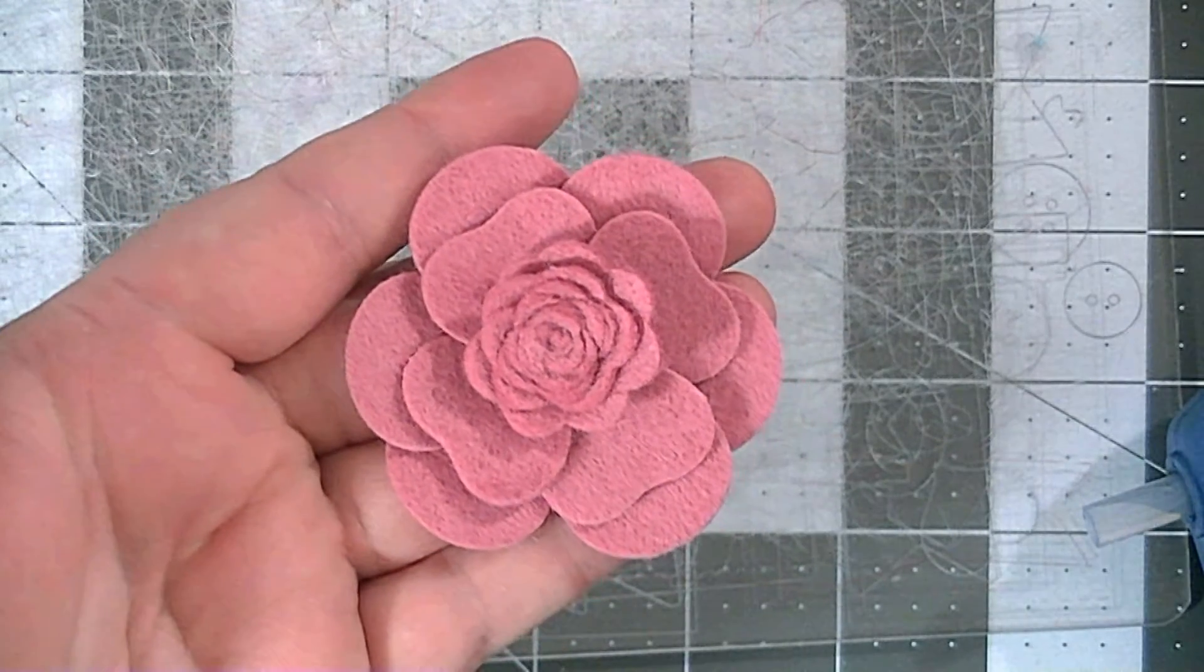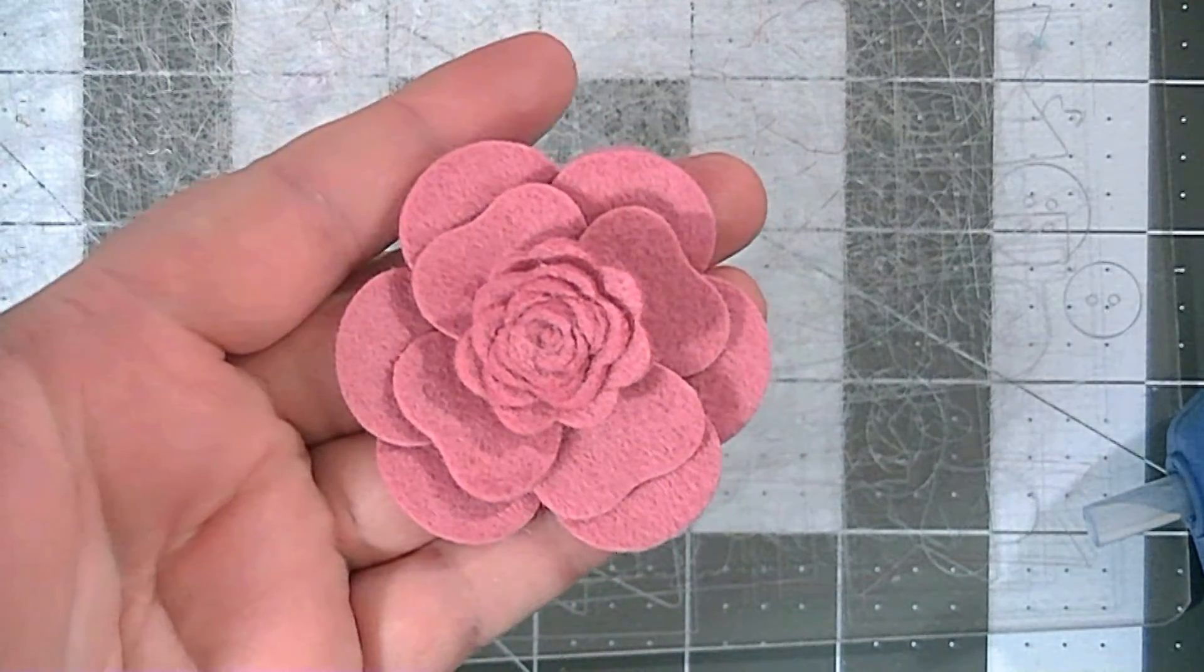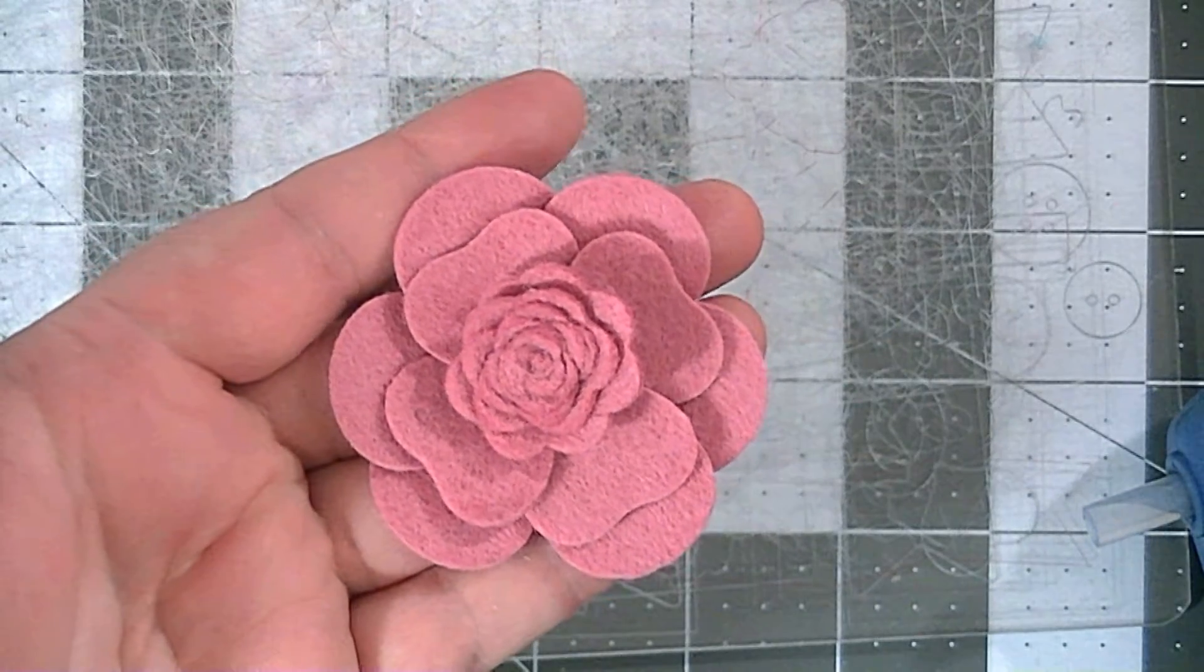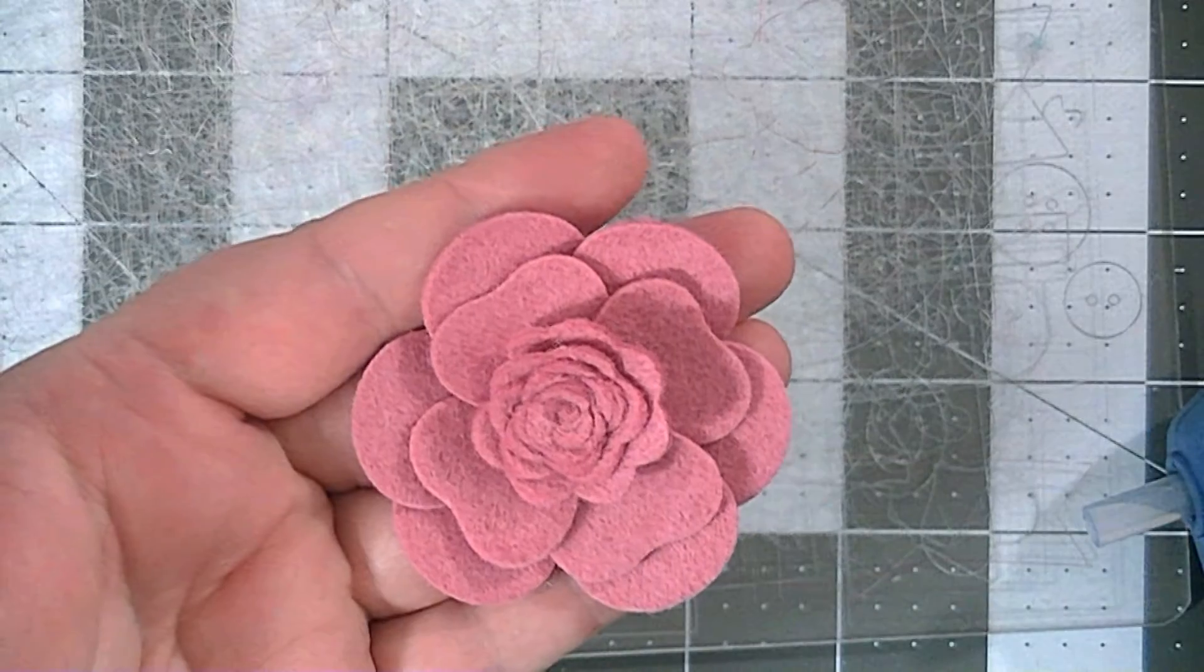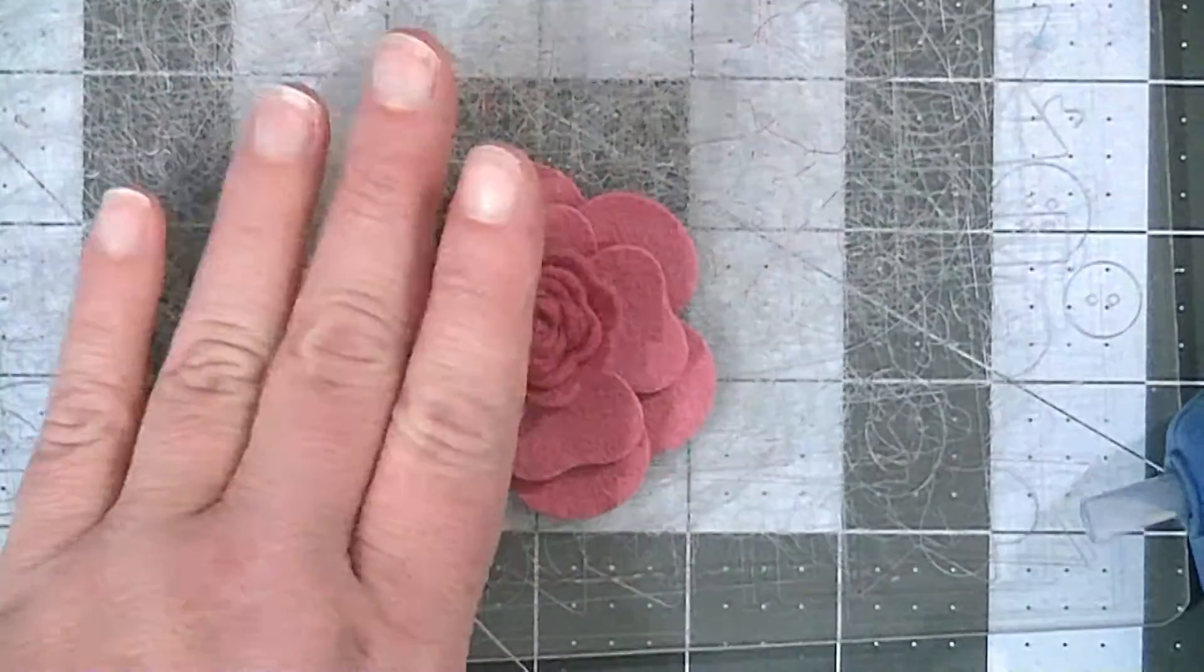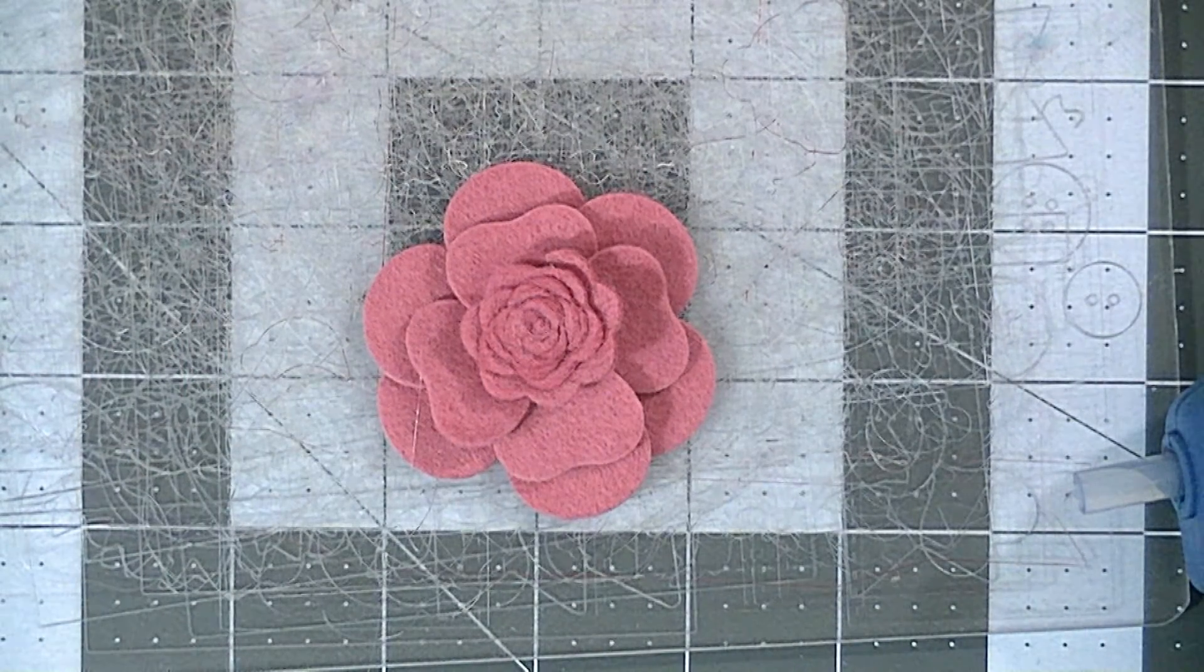If you want to know where I got the felt, I use My Favorite Things felt, and I'll also link to their felt in the description box. The other flower that I made was using this die.